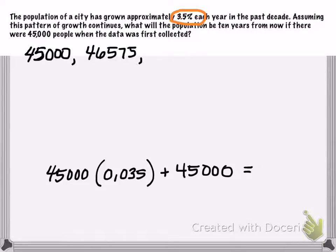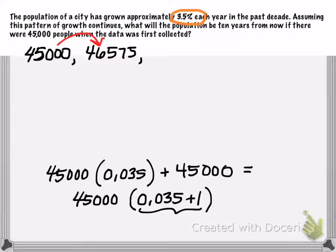So now we want to figure out what did I multiply by to go from one term to the next year, because I clearly did not multiply by just 0.035. And if you look at the work that we have down below, you can see if I were to factor out 45,000 from both of these terms, I'd be left with 0.035 plus 1. In other words, I'm really multiplying that 45,000 by 1.035.